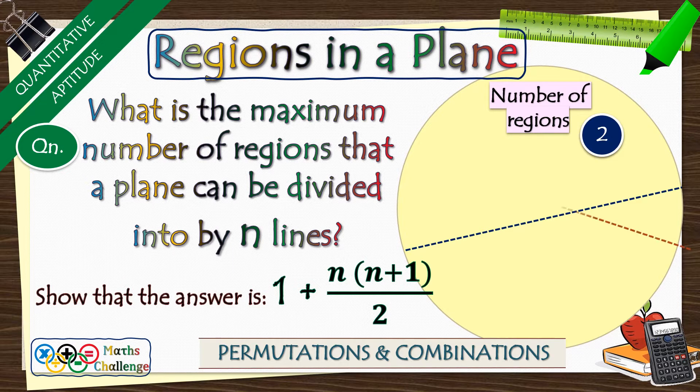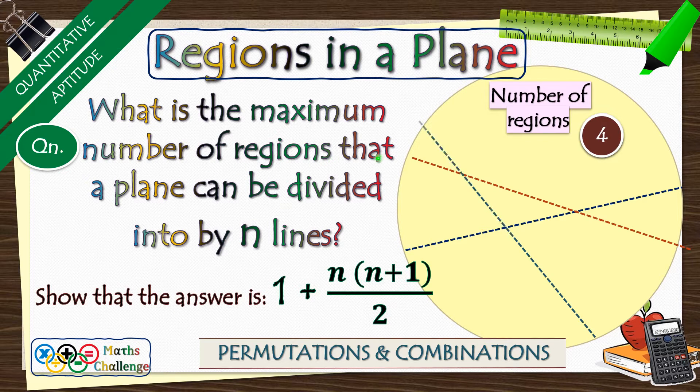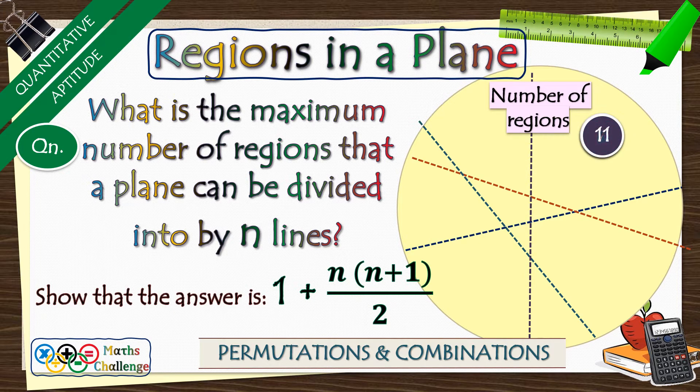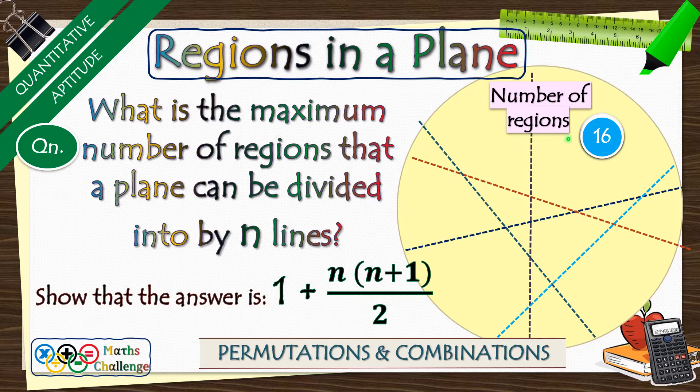We are going to discuss what is the maximum number of regions that n lines can divide a plane into. As an example, did you know that if we draw 5 lines, they can form up to 16 regions on a plane? For 6 lines, the maximum number of regions that can be formed on a plane are 22.